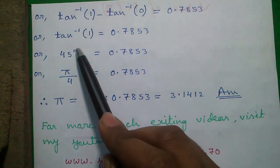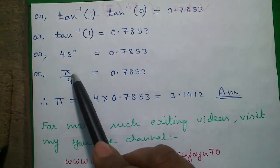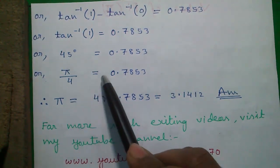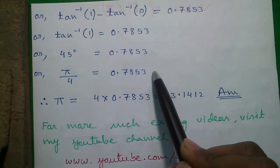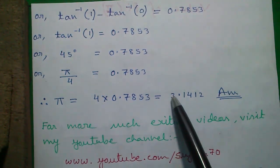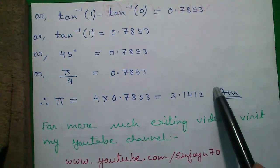Tan inverse of 1 is also pi by 4 or 45 degrees. Pi is 180 degrees, so 180 by 4 is 45 degrees. So pi by 4 equals to 0.7853 or pi equals to 4 into 0.7853 equals to 3.1412 which is our approximated value of pi and our answer.